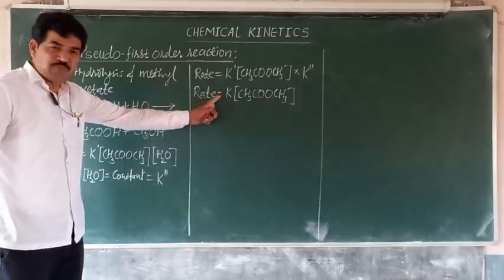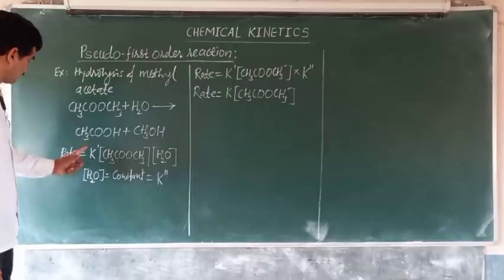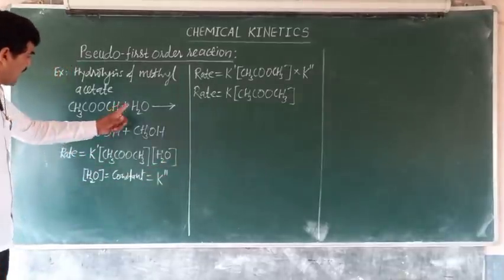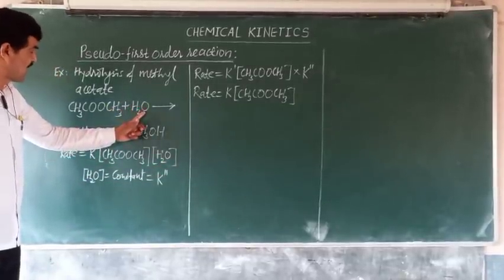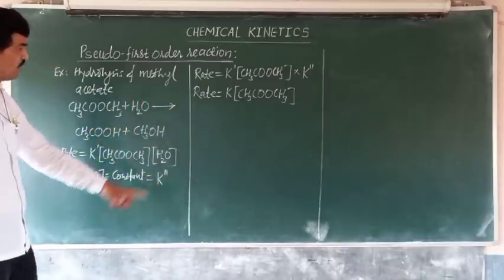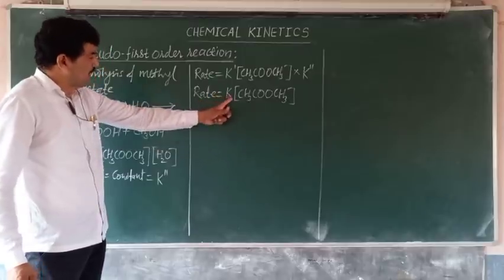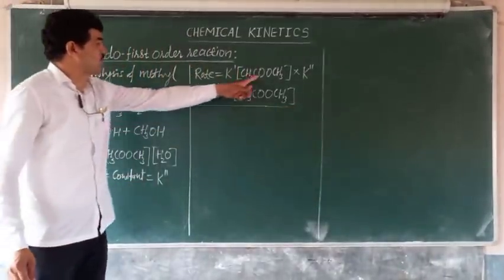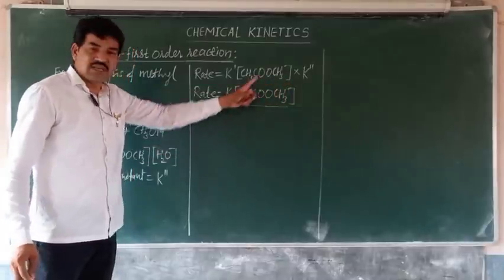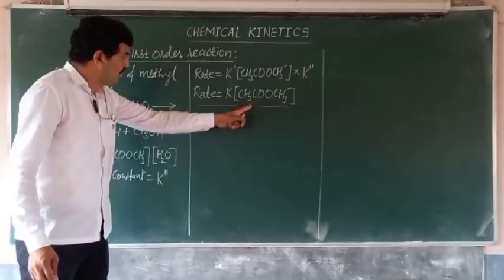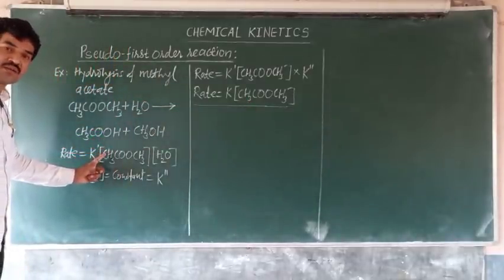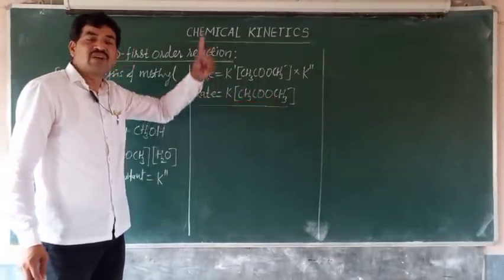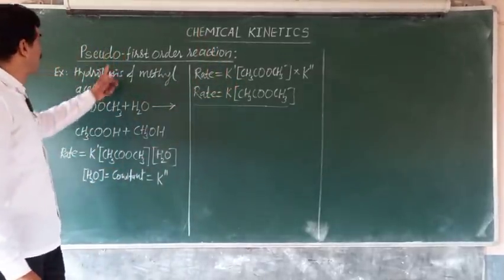So in this reaction, the expected rate law is rate = k' × [CH3COOCH3] × [H2O], but since water is taken in very large excess, H2O concentration is treated as constant and the rate law changes to rate = k × [CH3COOCH3]. From this rate law, the reaction is first order. A reaction expected to be higher order but which actually behaves as first order is called a pseudo first order reaction.